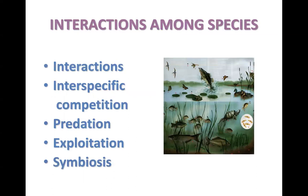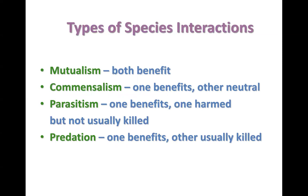Looking at interactions among species and organisms, there are interactions such as competition, predation, and symbiosis. We often describe types of species-specific interactions as either mutualistic, commensal, or parasitic. A mutualistic interaction is one where both parties benefit from the relationship. Commensalism is a type of interaction where one party benefits and the other is neither harmed nor receives any benefit — one party benefits and the other is neutral.